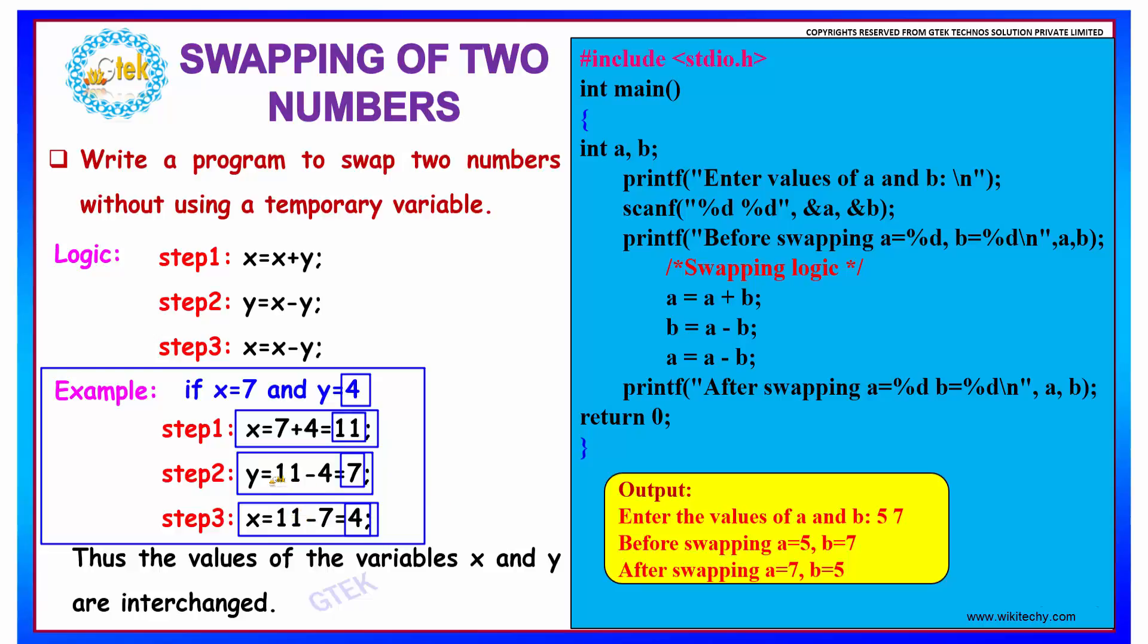So as you can see, at the end of the logic, we have a value of y to be x and a value of x to be y. It is pretty simple, right?